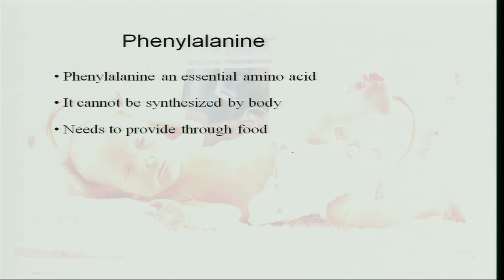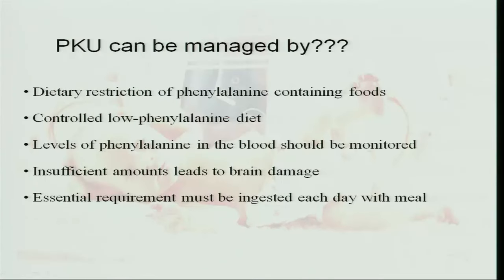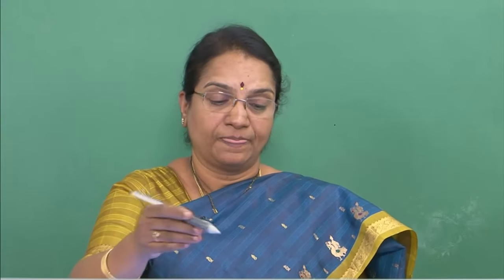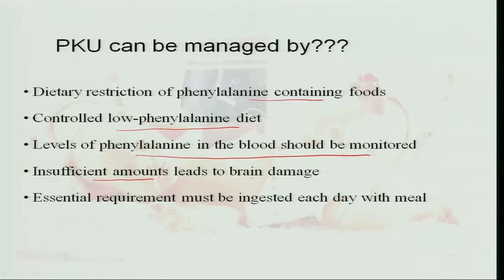Phenylalanine is one of the eight essential amino acids and cannot be synthesized by the body, so it must be provided through food. To manage phenylketonuria, there should be dietary restriction of phenylalanine-containing foods. A low phenylalanine diet is used, and the levels of phenylalanine in the blood should be monitored, since insufficient amounts in the blood leads to brain damage.